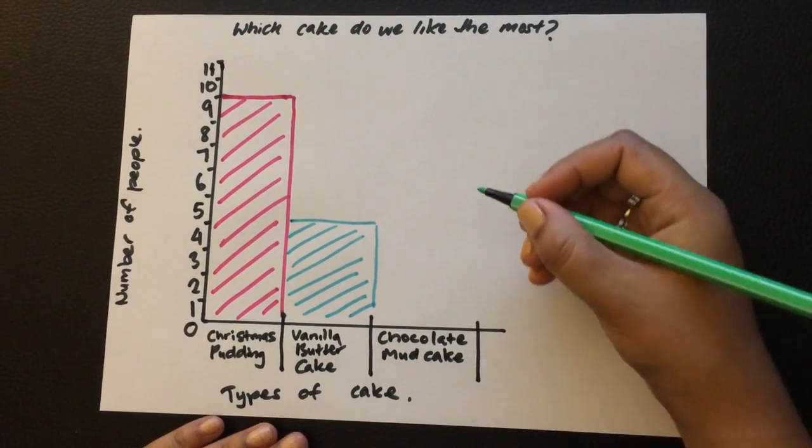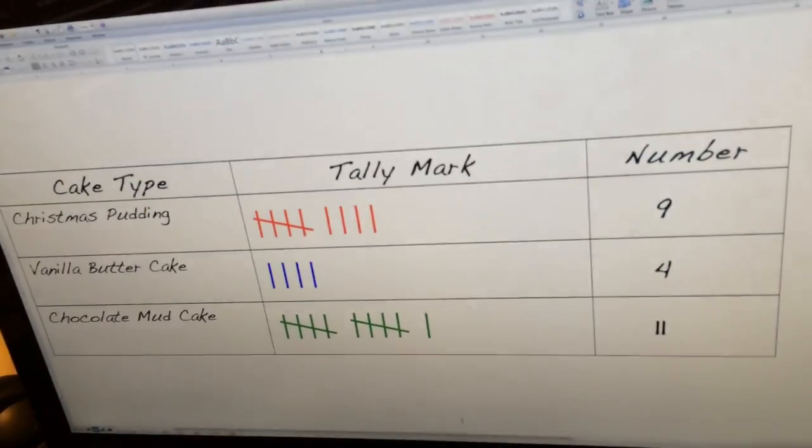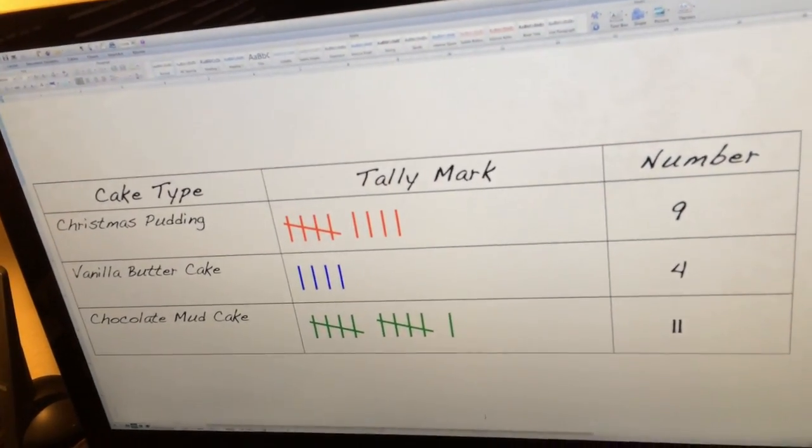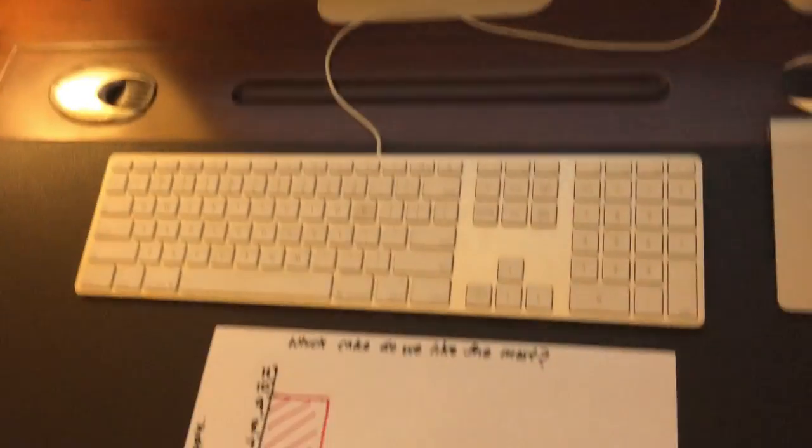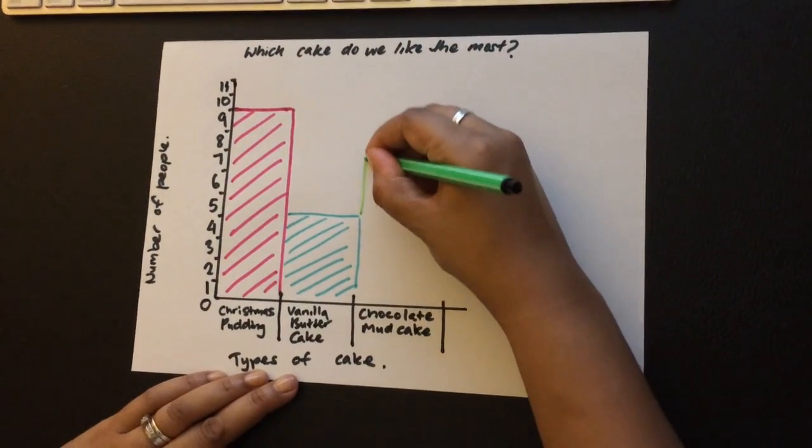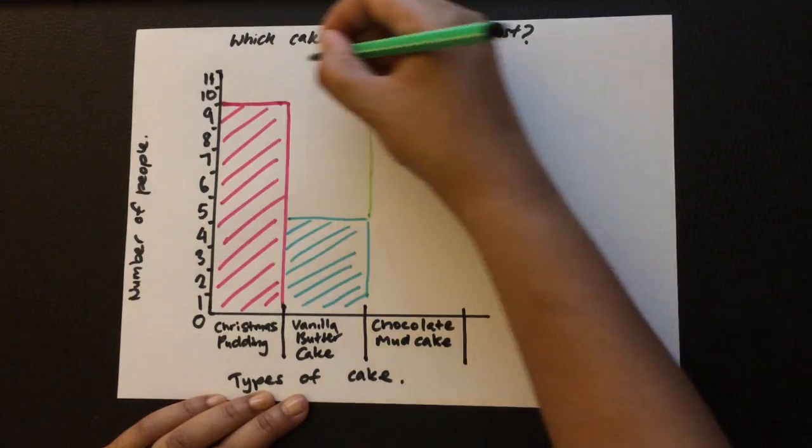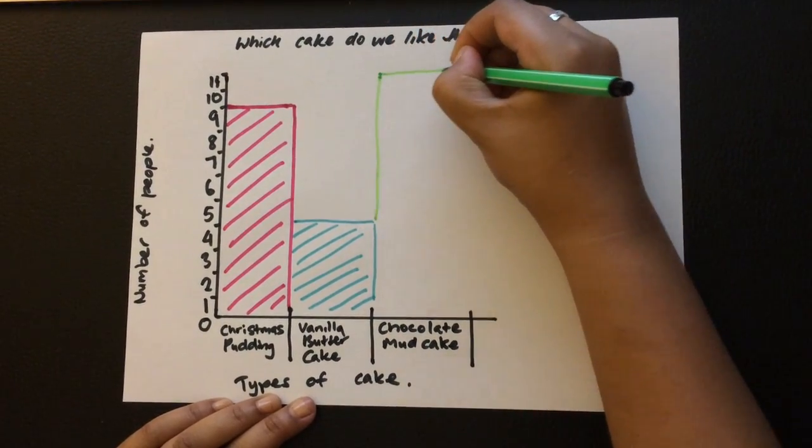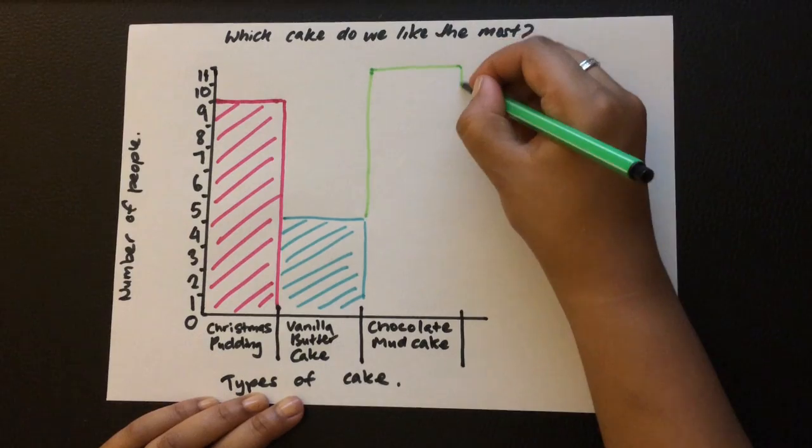And last we do the chocolate mud cake, and 11 people have chocolate mud cake. So from here we use a line, we go up to the top because that was our top number, up to 11 and down.